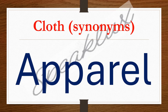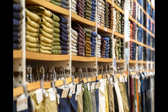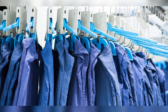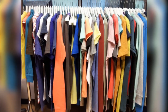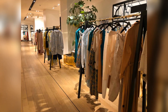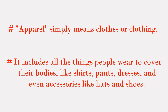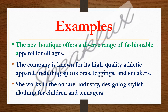Now let's move to our next word: apparel. Apparel is again a type of clothing but it is much broader. Imagine a store specializing in men's and women's apparel — it means the store sells a variety of clothing items like shirts, pants, dresses, coats, and much more. Apparel consists of the entire range of clothing options available to you. For example: the new boutique offers a diverse range of fashionable apparel for all ages. The company is known for its high-quality athletic apparel including sports bras, leggings, and sneakers. She works in the apparel industry designing stylish clothing for children and teenagers.